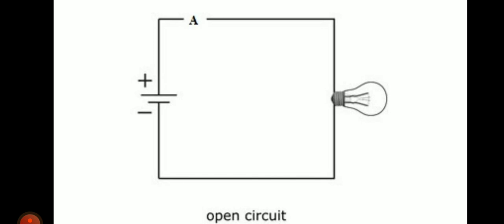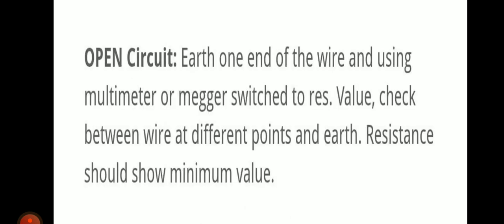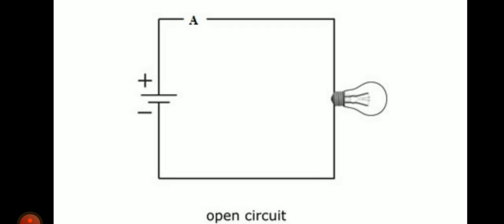How do you test this open circuit fault? We will earth one end of the wire, and using a megger or multimeter switched to the resistance setting, we will check between the wire at different points. The resistance should show a minimum value. If it shows a minimum resistance value, then we can say this is an open circuit fault.